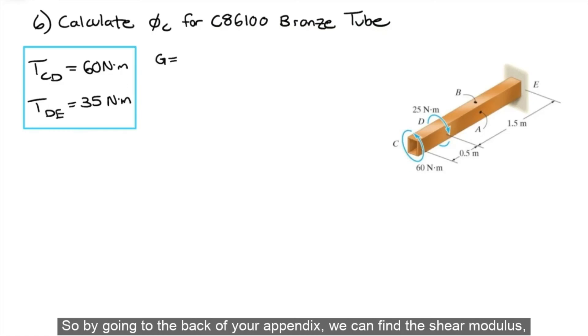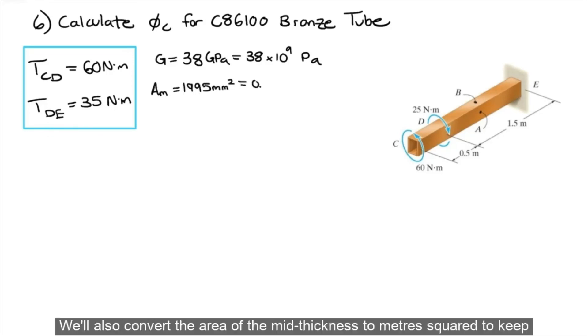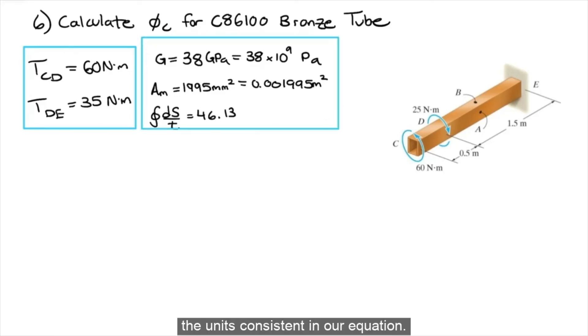So, by going to the back of your appendix, we can find the shear modulus, G, which is 38 gigapascals, which is also 38 times 10 to the power of 9 pascals. We'll also convert the area of the mid thickness to meters squared to keep the units consistent in our equation.